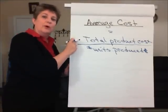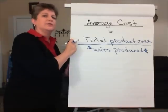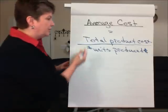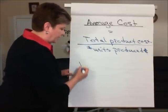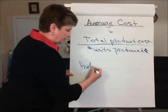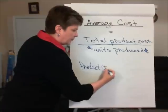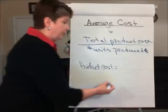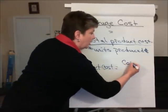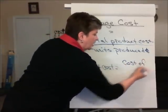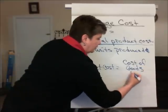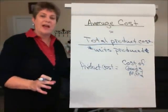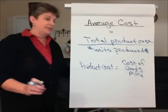In that case, instead of just taking the total product or manufacturing cost of materials, labor, and overhead incurred this period, rather we would substitute up here for product cost the cost of completed units for the period — which of course is cost of goods manufactured, cost of goods manufactured.